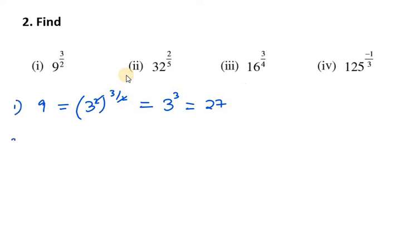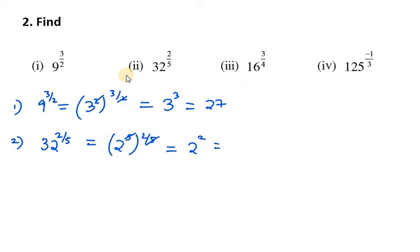The second part is 32 raised to the power 2 over 5. As before, 32 is 2 raised to power 5. With exponent 2 over 5, the 5s cancel and we are left with 2 squared, which equals 4.